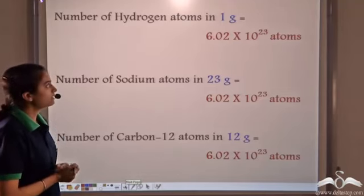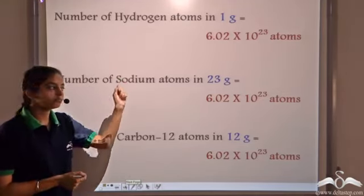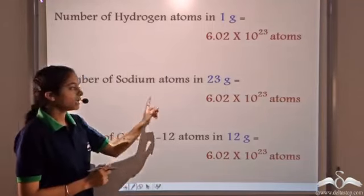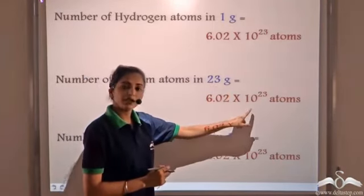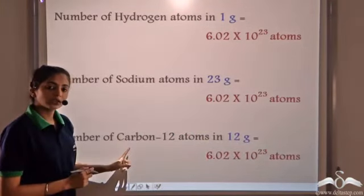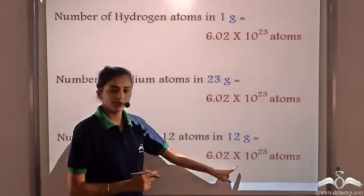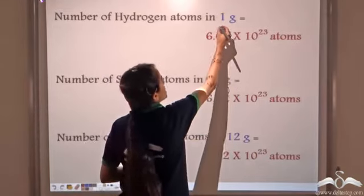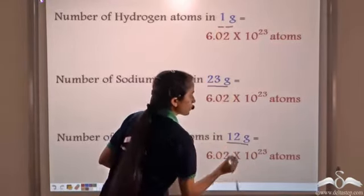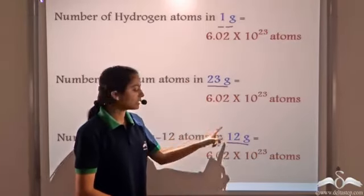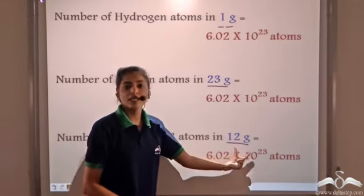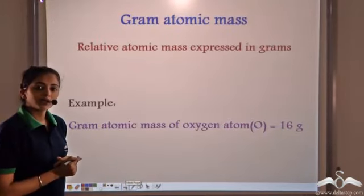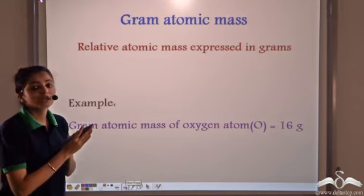Let's recall. We had seen that the number of hydrogen atoms in 1 gram is 1 mole, that is 6.02 × 10²³ atoms. Similarly, the number of atoms in 23 grams of sodium is the same number — 1 mole. And the number of atoms in 12 grams of carbon-12 is the same number, 6.02 × 10²³. These quantities are special: they are the relative atomic masses expressed in grams, known as the gram atomic masses.